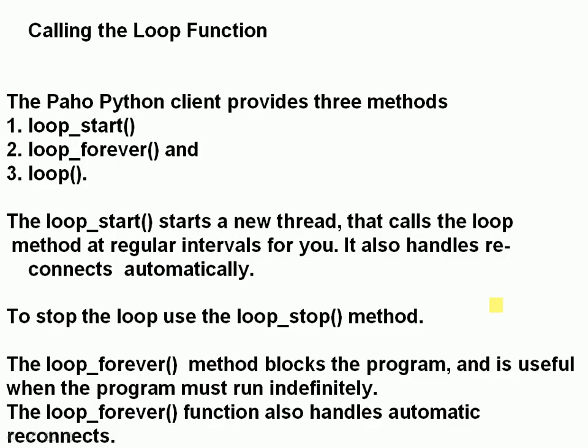To call the loop function, the client provides three methods. One is the loop_start method, the other is the loop_forever method, and the other is just the loop method. The loop_start method starts a new thread, and it calls the loop at regular intervals. It also handles reconnects automatically, so if for some reason the client gets disconnected, it will automatically try to reconnect. And to stop it, you need to use the loop_stop method, and you should stop the loop when your script finishes, so there should be some code in your script to stop it at the end.